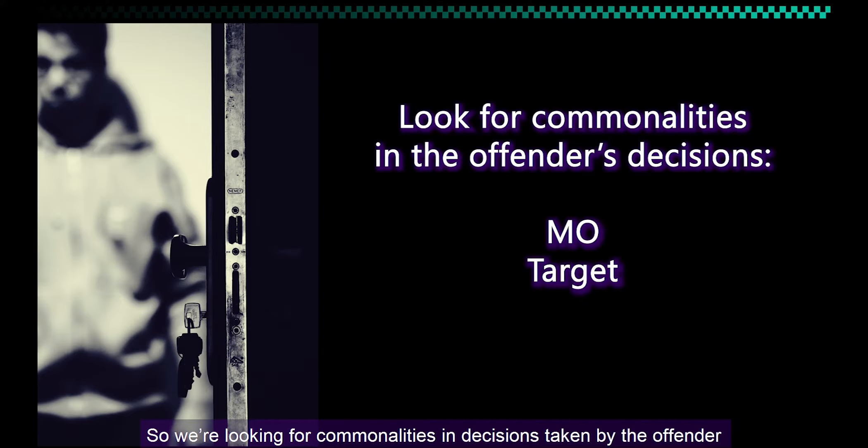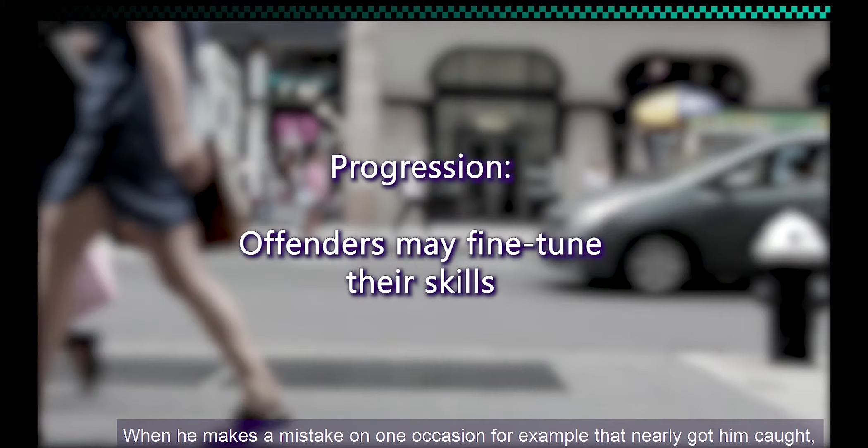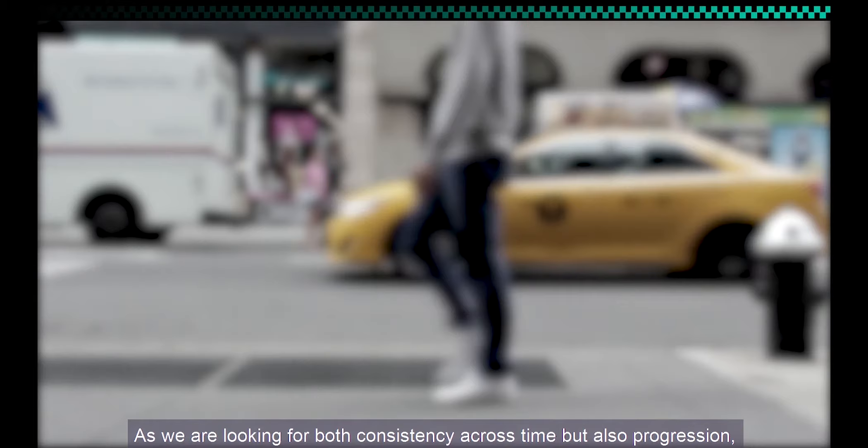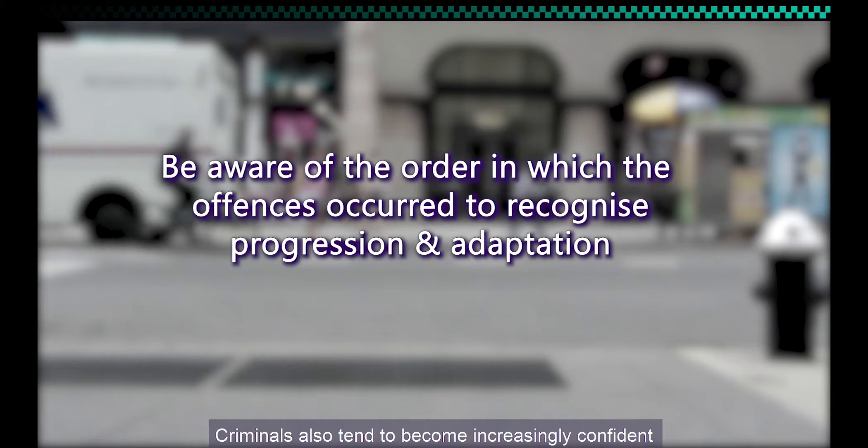We also need to take into account progression. A prolific offender might gain experience, but perhaps also additional skills during the commission of each crime. When he makes a mistake on one occasion that nearly got him caught, he might take care to avoid that or prepare for it next time round. As we are looking for both consistency across time but also progression, it is important to identify in which order the offences took place. Criminals also tend to become increasingly confident as they continue offending without getting caught, so they might be willing to take more and more risks.